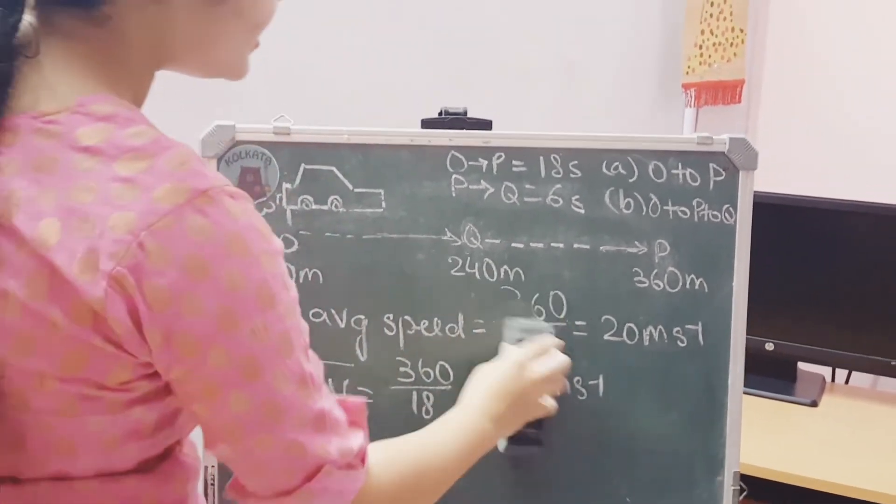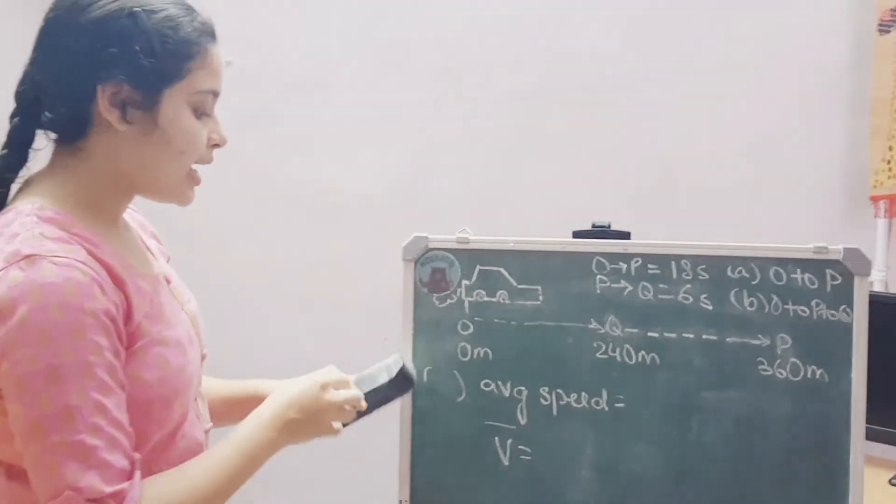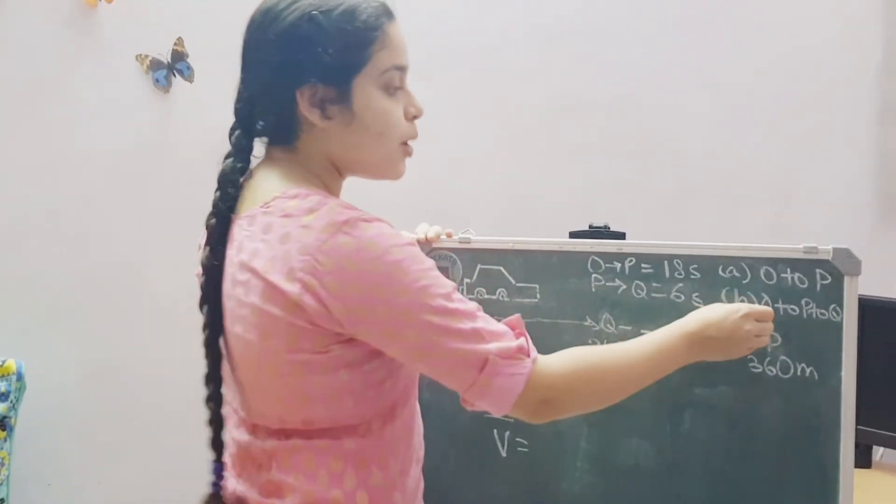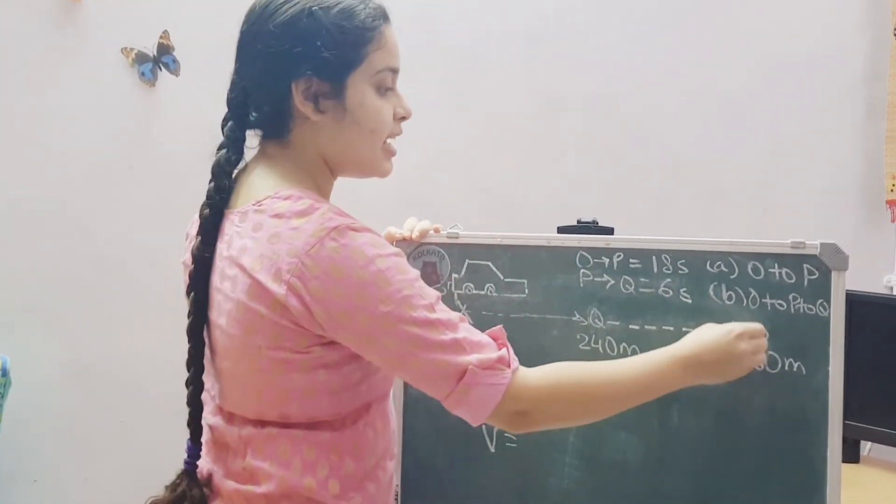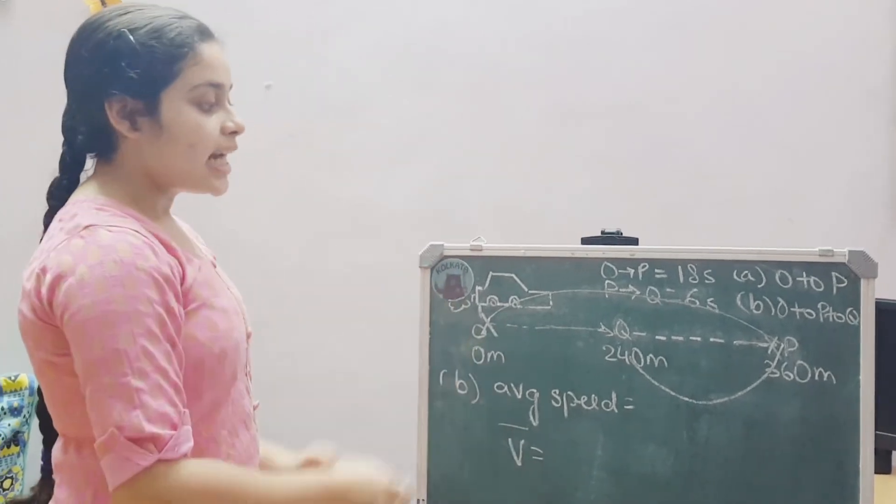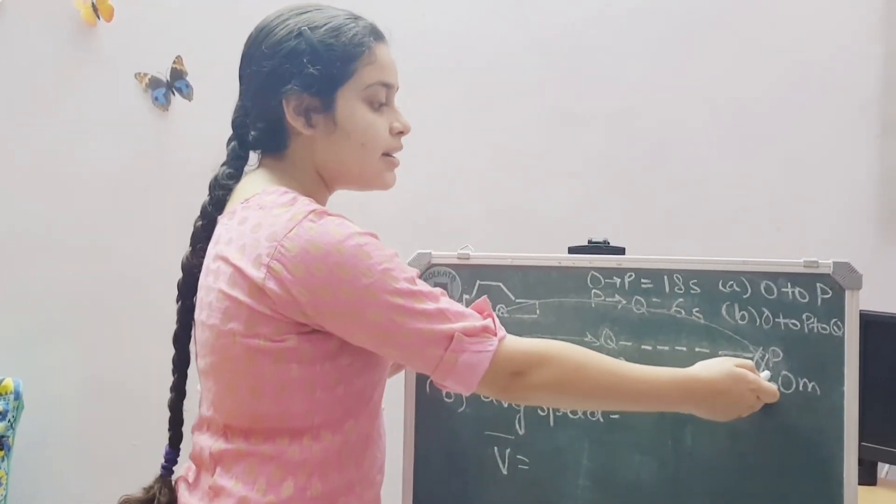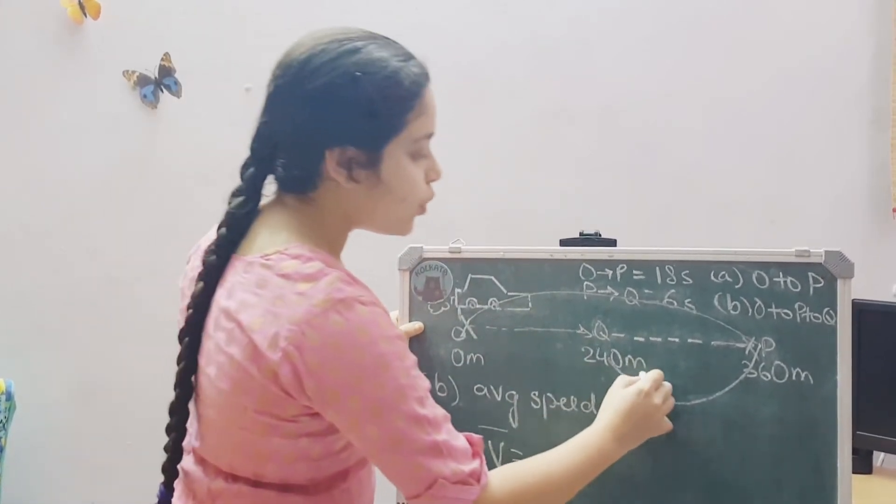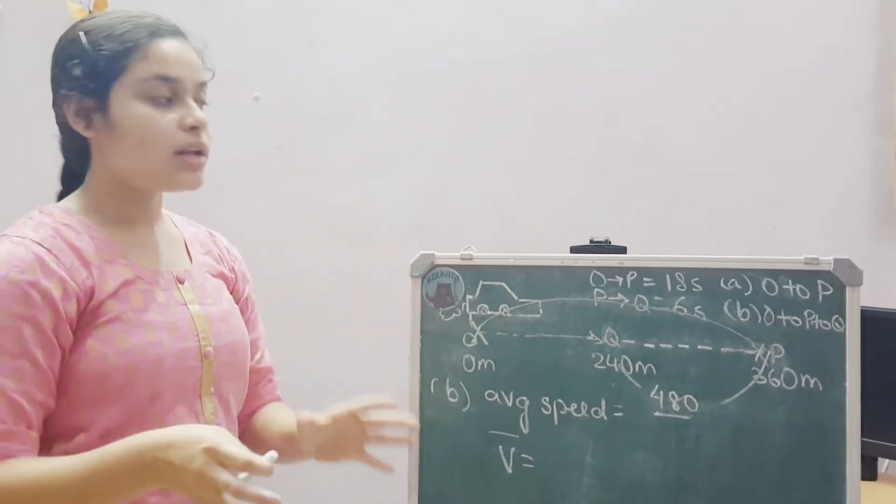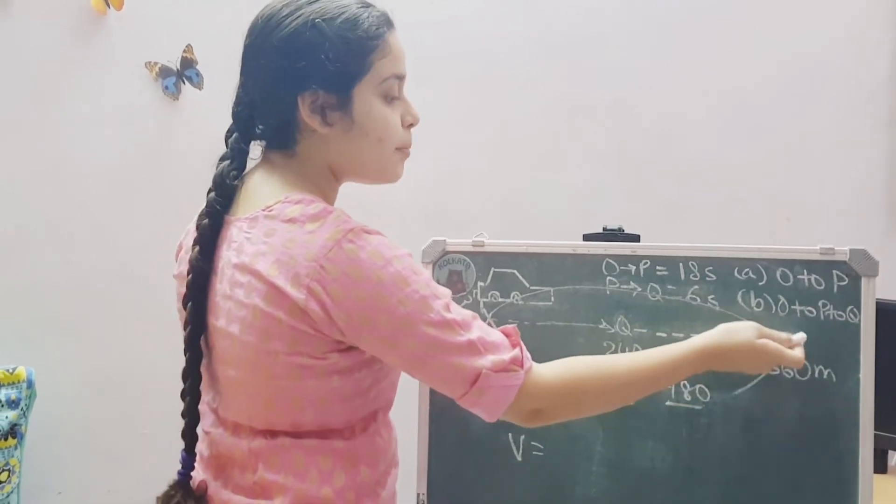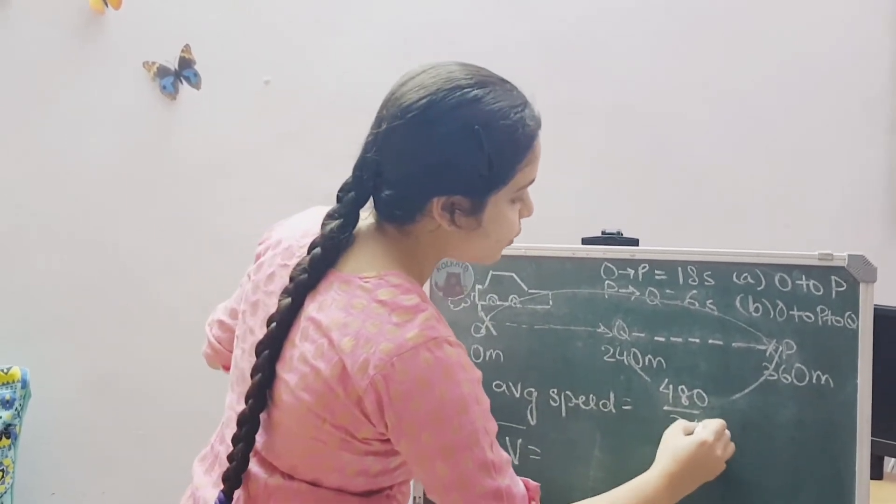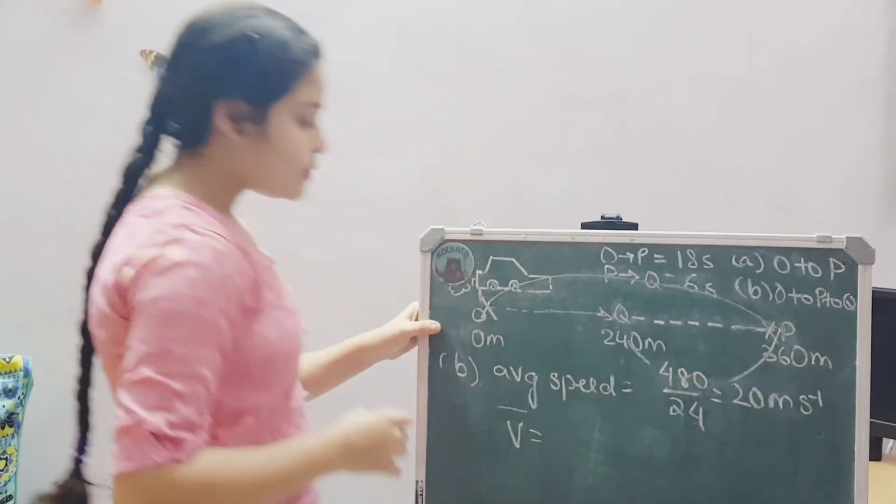Now, if we talk about the second part. The second part, it starts to get a bit complicated. But let us see how to solve this in a simple manner. So, for part B, they have said from point O to point P and then back to point Q. So, we go like this and then we come back here. So, in addition to travelling 360 meters, we are travelling 120 meters extra. Which means the total distance that we are covering is 480 meters. What about the total time taken? From O to P plus time taken from P to Q. That is 18 seconds plus 6 seconds. That is again 24 seconds. So, which means 20 meter per second is the average speed for this.